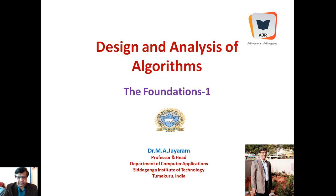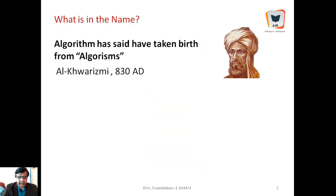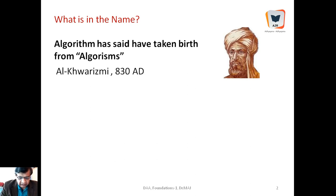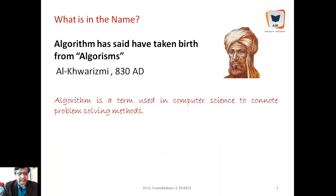The name 'algorithm' is said to have taken its birth from 'algorismus.' It is due to Mohammed Musa al-Khwarizmi — formerly Latinized as 'algorithm' — who was a Persian polymath who produced vastly influential works in mathematics, astronomy, and geography around 830 AD. He is the person after whom the term originates. Algorithm is a term used generally in computer science for problem-solving methods.